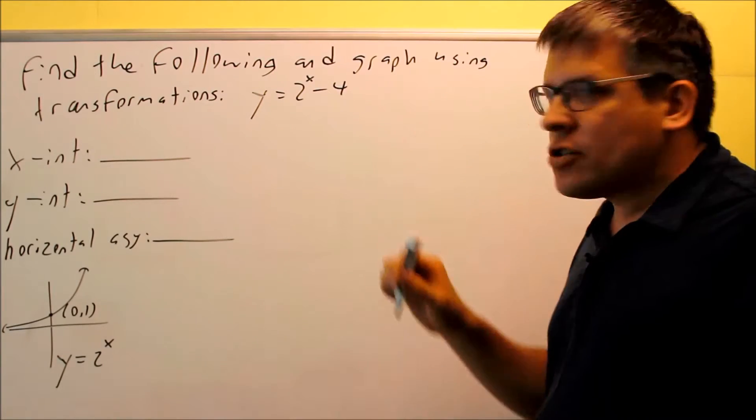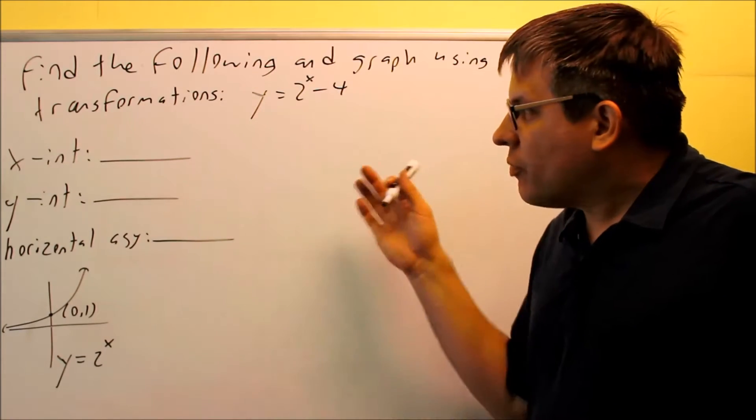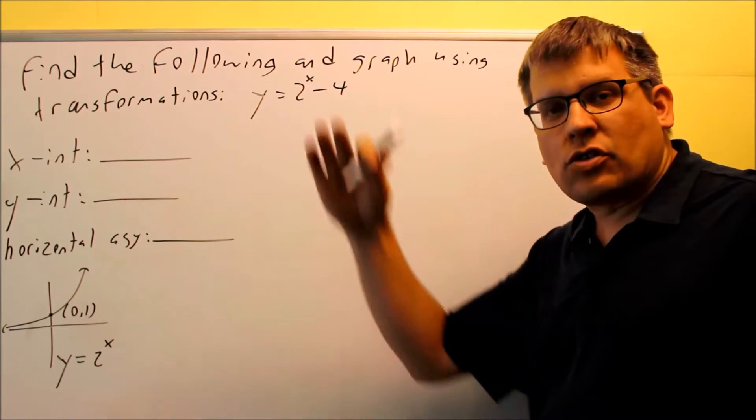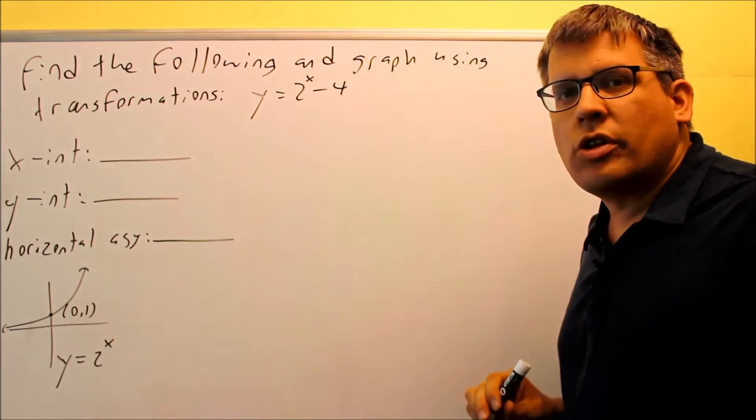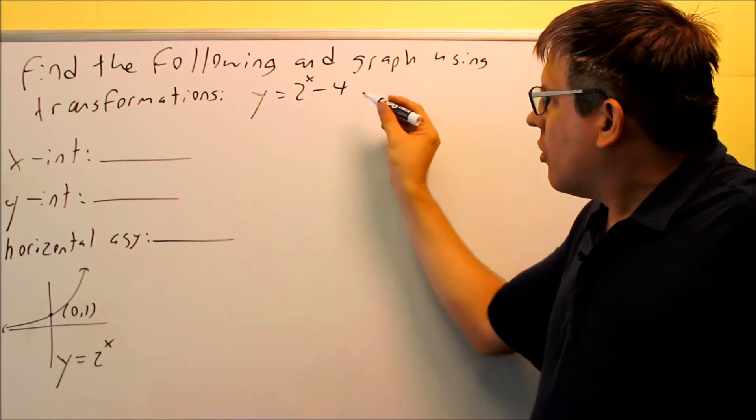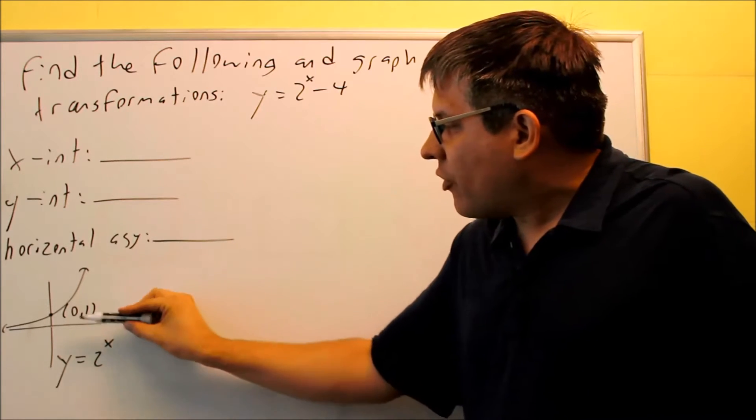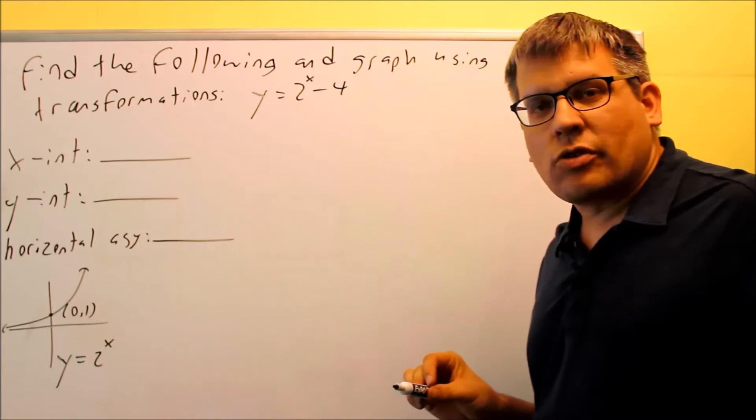We need to use transformations, which means these are things that we do to the graph to shift them up and down or left and right. The problem we're doing is y equals 2 to the x minus 4. So that means we're going to take the base graph, and we're going to shift it four places straight down.